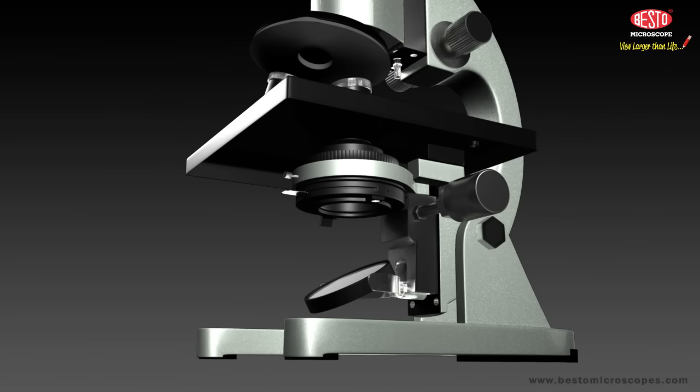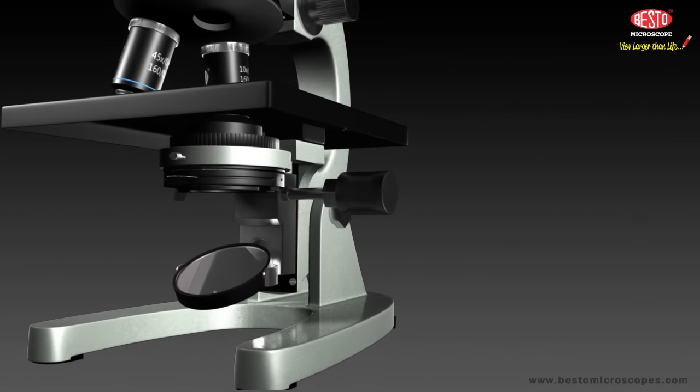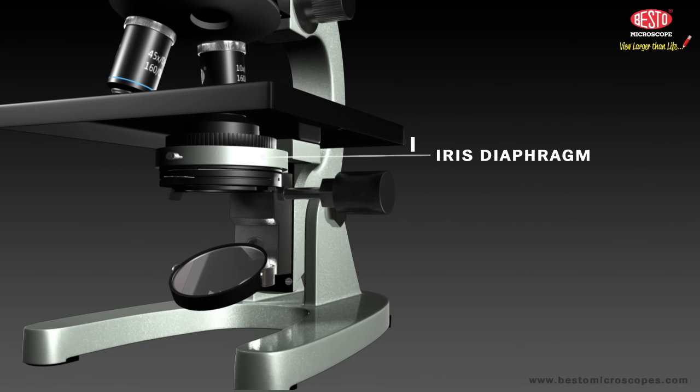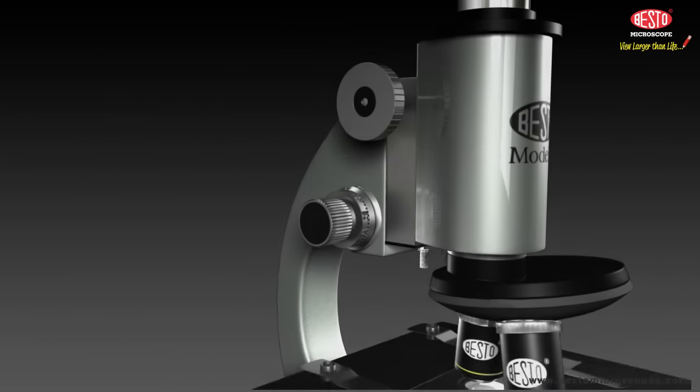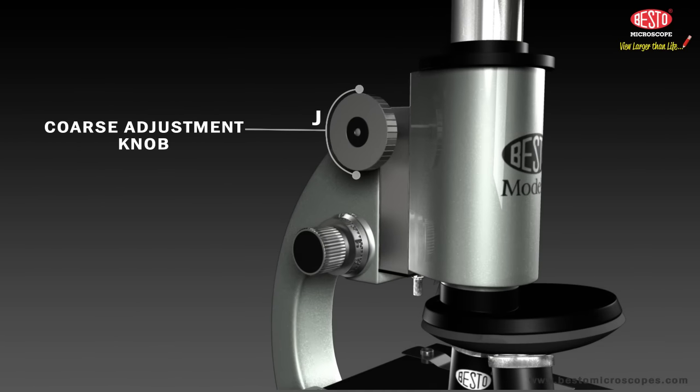I. The iris diaphragm is used to control the diameter and cone angle of the light transmitted onto the specimen. J. The coarse adjustment knob is the large knob used to adjust the position of the body tube, allowing you to quickly bring your sample slide into view.